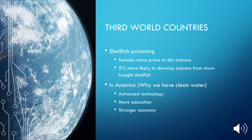Turning to third world countries — again, the Philippines and Indonesia are very affected. Females are more prone to this sickness, and both females and males are five percent more likely to develop a sickness from store-bought shellfish compared to locally caught seafood. If you live by the beach, your food is fresher than if it has to be transported. In America, we largely have clean water because we have advanced technology, education, and a strong economy.